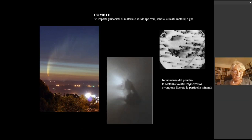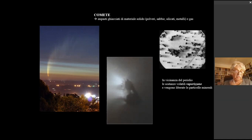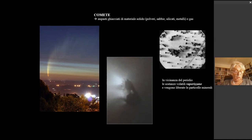Quindi le comete sono nella maggior parte dei casi l'origine delle stelle cadenti. Le comete, come sappiamo, sono sostanzialmente dei rimpasti ghiacciati di gas e materiale solido: polveri, sabbie, silicati, metalli. Quando si avvicinano al Sole cominciano a espellere delle particelle di materiale che si allontanano in rapporto alla loro massa. A questo punto si potrebbe pensare che ciascuna cometa dia luogo a delle meteore, ma questo non è vero e adesso vediamo perché.